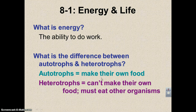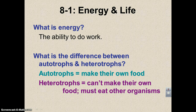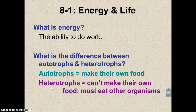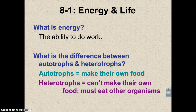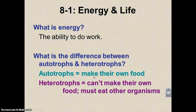Heterotrophs must eat other organisms — these would be all your animals. If you're not a plant, you're going to be a heterotroph. This includes decomposers like fungi, lots of bacteria, all animals, and most protists. Autotrophs can make their own food, usually by photosynthesis but maybe by chemosynthesis, and heterotrophs must eat different things or other organisms.